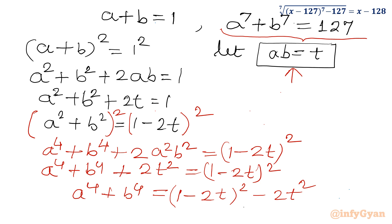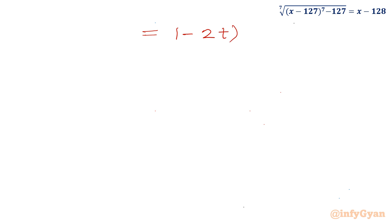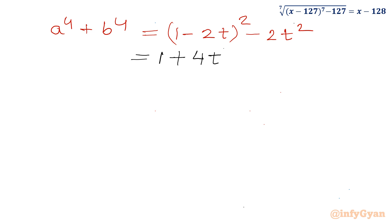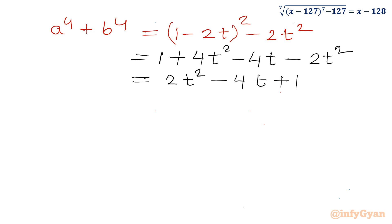Let us simplify the RHS. We expand (1 minus 2t) whole square minus 2t square using the formula, giving a square plus b square minus 2ab. This simplifies to 1 minus 4t plus 4t square minus 2t square, which is 2t square minus 4t plus 1. So a power 4 plus b power 4 equals 2t square minus 4t plus 1.